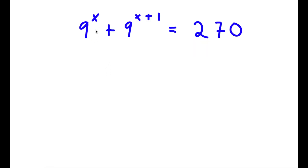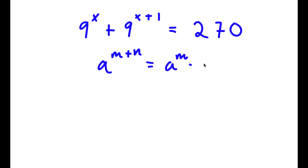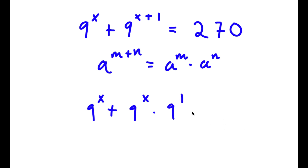In this problem, I have 9 to the power of x plus 9 to the power of x plus 1 is equal to 270. If I have something in the form a to the power of m plus n, this equals a to the power of m times a to the power of n. So 9 to the power of x plus 1 I can rewrite as 9 to the power of x times 9 to the power of 1, and this equals 270.